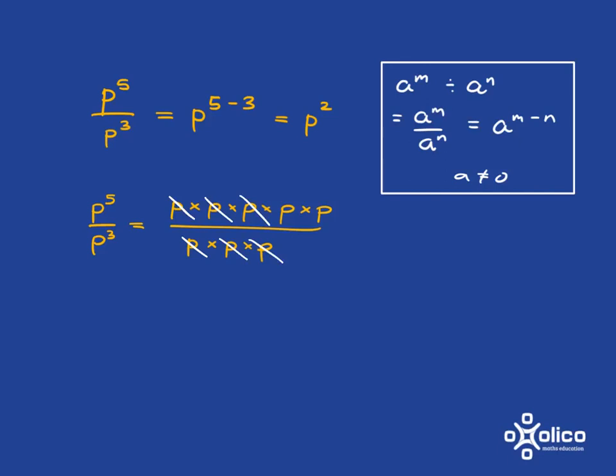So what are you going to be left with? You've taken 3 p's from the top, so what you're going to be left with is 5 minus 3 at the top, which is 2. You can see very easily, the rule is not some mystery. It makes complete sense that when you're dividing the numbers, you subtract the exponents.